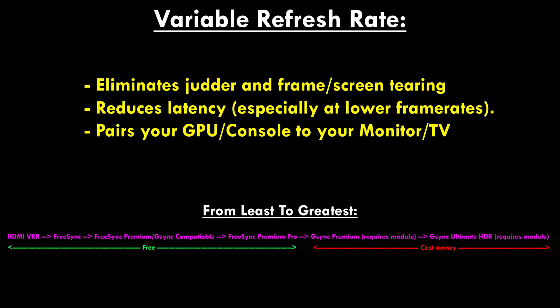FreeSync Premium is the step up from HDMI VRR and is freeware that needs to go through a minor certification process, ensuring the screen has at least 120Hz at 1920x1080p or higher, has low frame rate compensation (LFC), and low latency. Nearly the same thing but on the NVIDIA side instead of AMD is G-Sync compatible, which this TV does not support. The step up from that is FreeSync Premium Pro, then G-Sync Premium and G-Sync Ultimate HDR, which require actual hardware placed inside the monitor — adding cost but delivering some of the best monitors you can get due to that rigorous certification process.